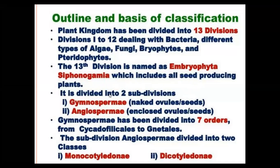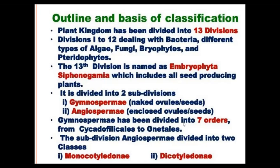Embryophyta Siphonogamma is divided into 2 subdivisions. The first subdivision is Gymnospermae with naked ovules or seeds, and Angiospermae with enclosed ovules or seeds. In Gymnospermae, naked seeds are developed and fruits are absent. In Angiospermae, enclosed ovules or seeds are present.